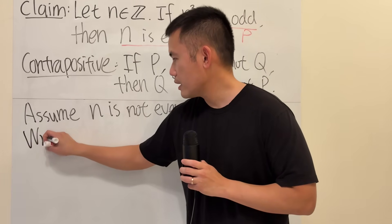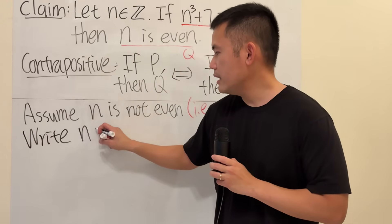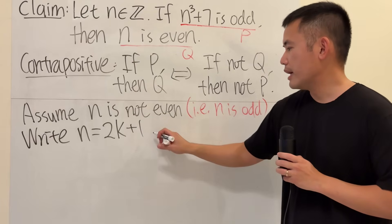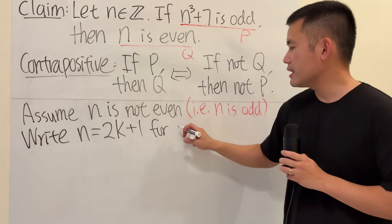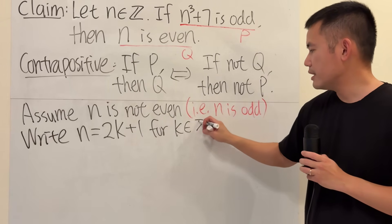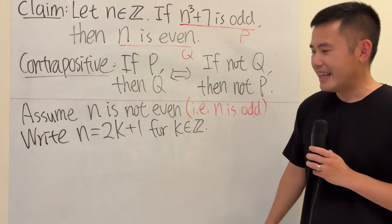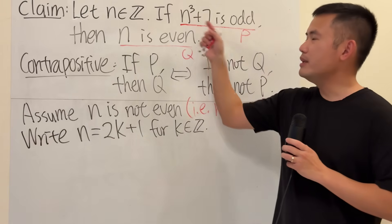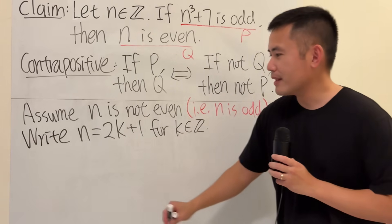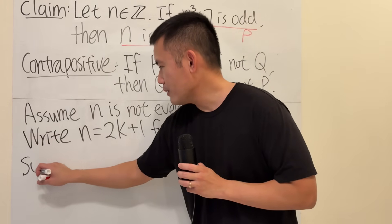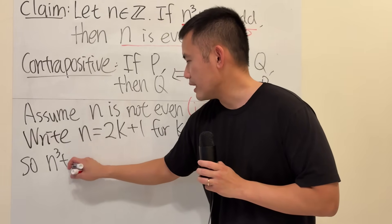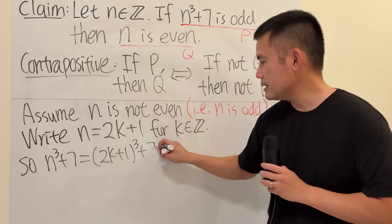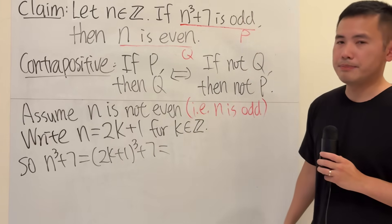We can write n in the form of 2 times an integer, let's say k, and then plus 1. And right here, I will have to indicate that k is just an integer. And right here, we can do something very nice. And that is just to plug in this into this expression and do some algebra. So, we will have the following. n cubed plus 7 is going to be 2k plus 1 to the third power and then plus 7. And now, let's just go ahead and expand that.